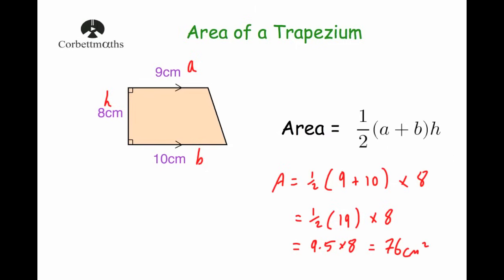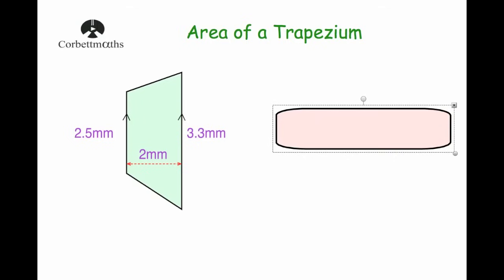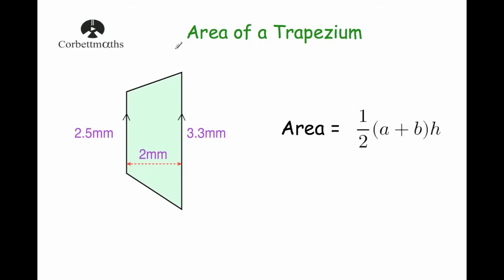Last example. This one is slightly different because the trapezium has been rotated 90 degrees — it's on its side. If you want to view it the normal way, you can turn the page or your head. I'll label the sides: a and b are the two parallel sides, and h is the distance between them — the height of the trapezium. The distance between the two parallel sides is two.